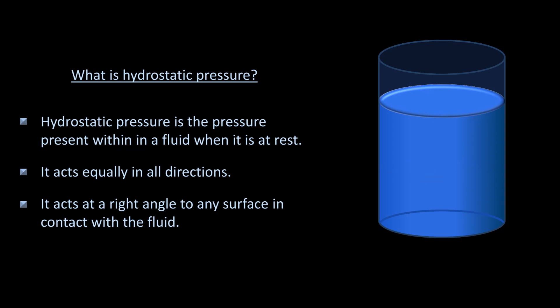As another example of this, imagine taking a playing card and submerging it vertically into the water. The hydrostatic pressure in the water will act at a right angle to any surface in contact with the fluid. That means that there is a right-sided pressure pushing on the left side of the card, and a left side of pressure pushing on the right side of the card. As these forces are equal, the card will not spontaneously move in either direction.